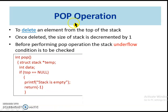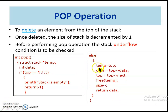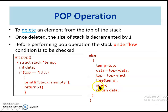Next, let us see the pop operation. The pop function is used to delete an element from the top of the stack. Before performing the pop operation, the stack is checked for empty, because the pop operation cannot be performed if the stack is empty. If the stack is empty, return minus 1. Else proceed with the deletion. To delete an element from the stack, set a temp pointer to point to the top and retrieve the data pointed by the top. Now make the top point to the node next to the current top by setting top equal to top.next. To delete the node physically, use the free statement — that's why a temp pointer is made to point to the top. Use free(temp) to delete the node physically and decrement the size variable. Finally, return the retrieved data.